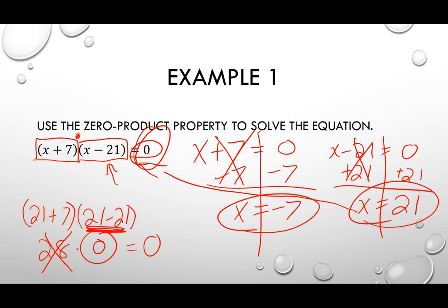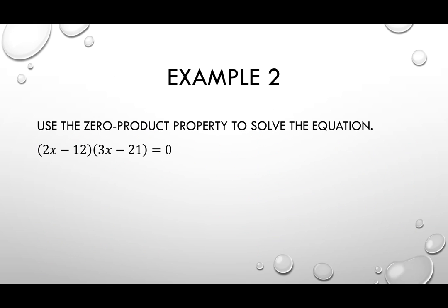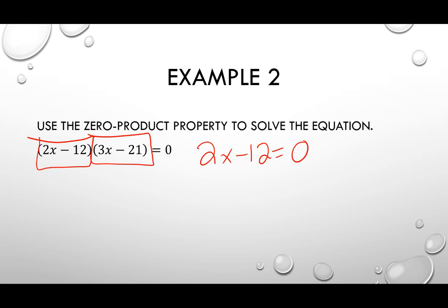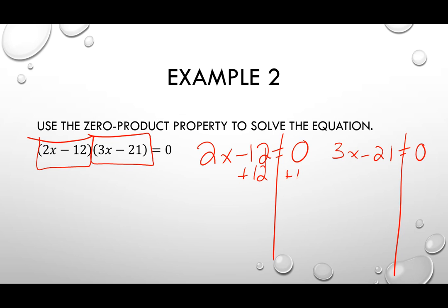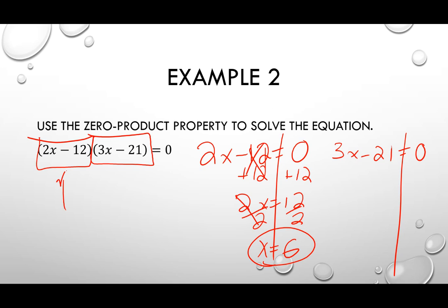That's how we use the zero product property to solve for X. Let's look at another one. I've got two components: two X minus 12, and three X minus 21. I'm going to do the same exact process and look at each of them. Let's take two X minus 12 and set it equal to zero. I add 12 to both sides, giving two X equal to 12, then divide by two, giving X equal to six. That is one solution — if you plug six in, the first piece will be zero, turning everything else into zero.